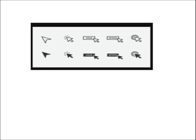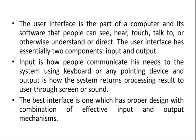In simple words, this is just an example of how I can tell the user that he can interact using a mouse. You can interact with the mouse by clicking on any of these. And one more thing — the best interface is one which has a proper design with a combination of effective input and output mechanisms.